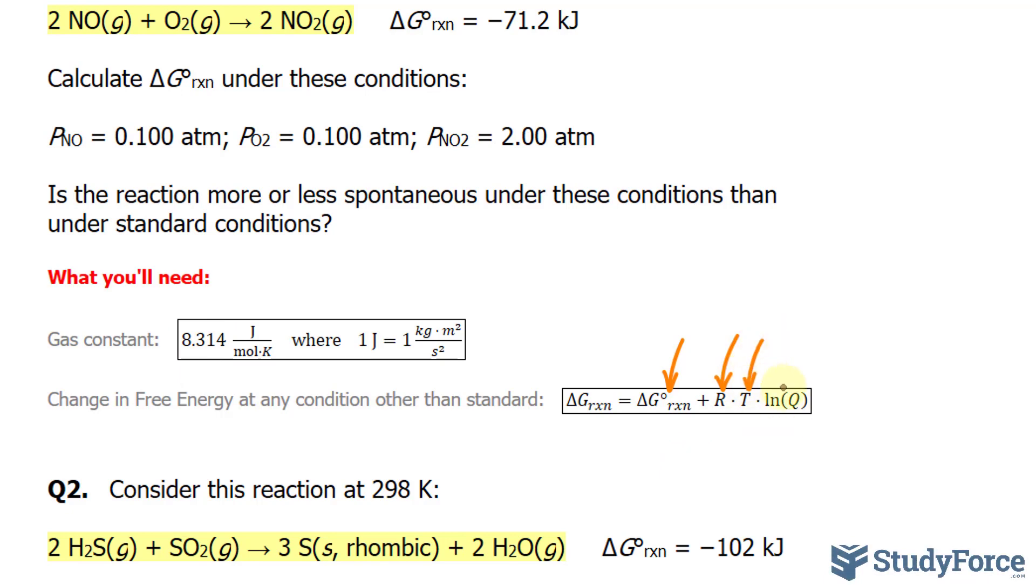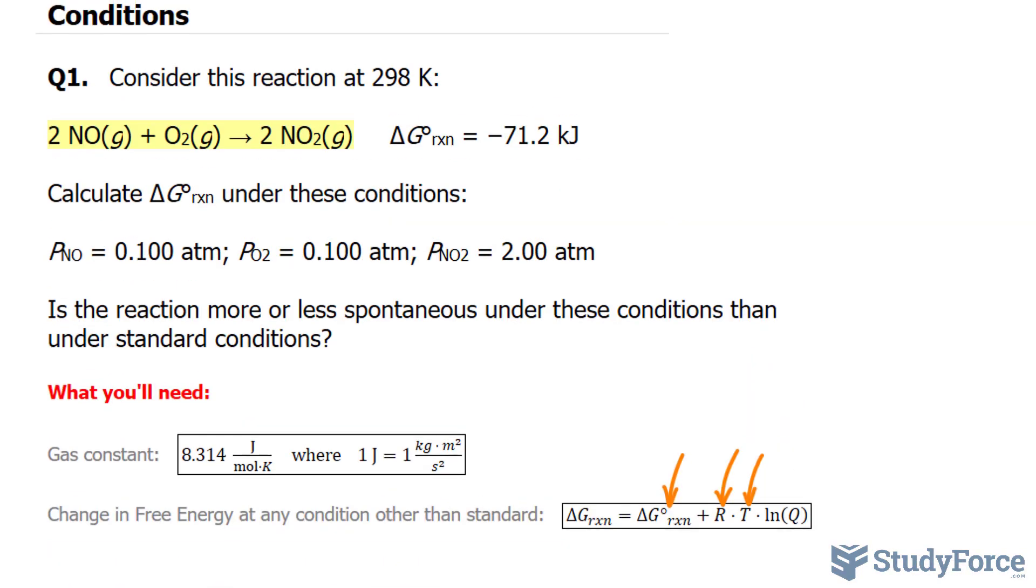And finally, we need to calculate Q, which is the reaction quotient. The reaction quotient is calculated like this, where we have the partial pressure for the products. That's given right here. It's 2.00, and we'll be raising that to the power of 2, because of this coefficient of 2.